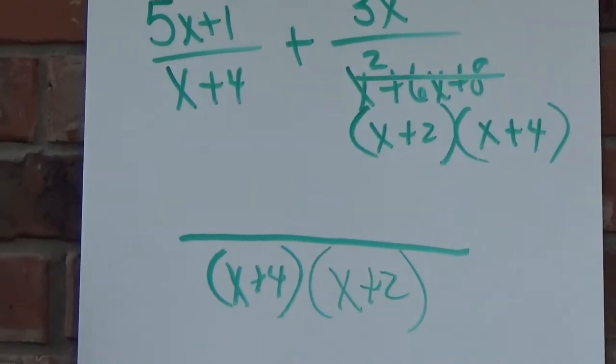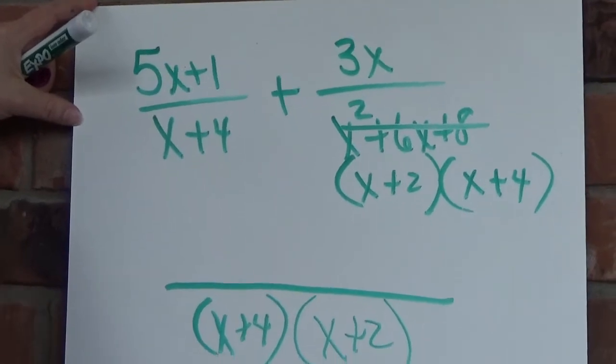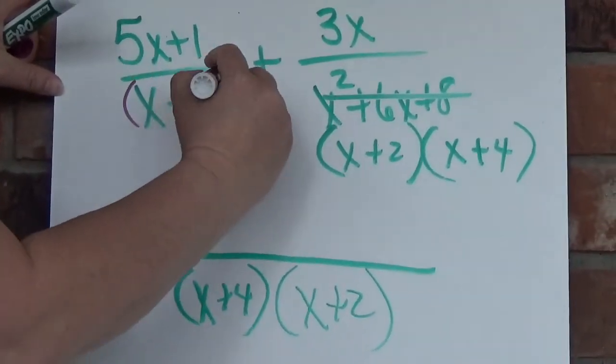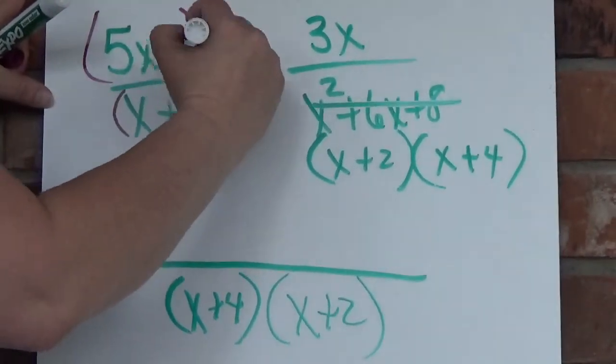Now I'm ready to fix the numerators. What do I multiply times x plus 4 to get this? I would have to multiply that times an x plus 2. So that means I have to multiply the numerator times x plus 2.